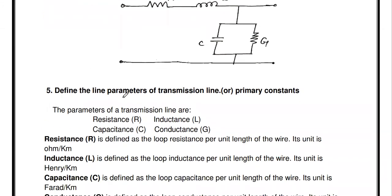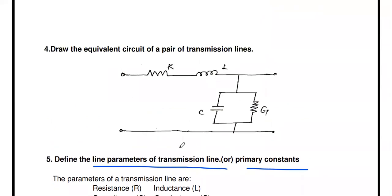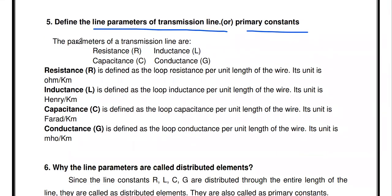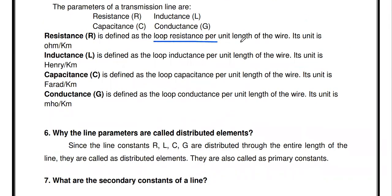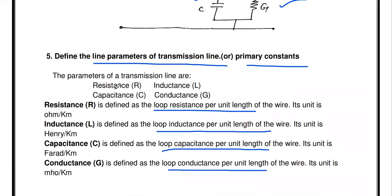Define the line parameters or primary constants of the transmission line. The primary constants are resistance R, inductance L, capacitance C, and conductance G. Resistance R is the loop resistance per unit length — its unit is ohms per kilometer. Inductance L is loop inductance per unit length — Henry per kilometer. Capacitance C is loop capacitance per unit length — farad per kilometer. Conductance G is loop conductance per unit length — mho per kilometer. RLGC are the primary constants or line parameters.